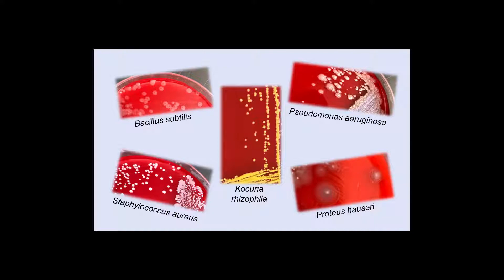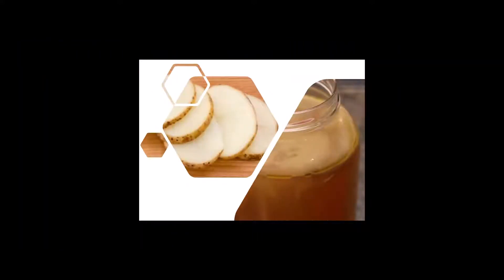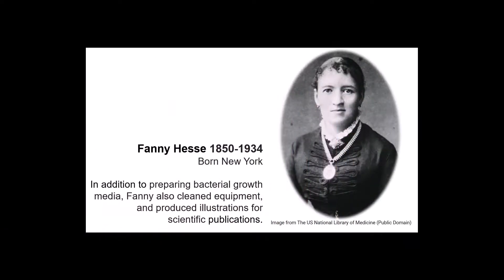If you were working in a microbiology lab back in the 1800s, bacteria were grown on potato slices, or on gelatin, or in beef broth. In 1882, when Walter Hess was an assistant in Robert Koch's microbiology laboratory in Berlin, Germany, his wife Franny suggested that they use agar instead of potatoes or gelatin.